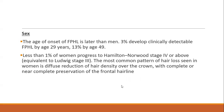The onset of female pattern hair loss is later than in men. 3% develop clinically detectable female pattern hair loss by age 29, and 13% by age 49. Less than 1% of women progress to Hamilton-Norwood stage 4 or above, which is equivalent to Ludwig stage 3. The most common pattern of hair loss seen in women is diffuse reduction of hair density over the crown, which completely or near-completely preserves the frontal hairline.